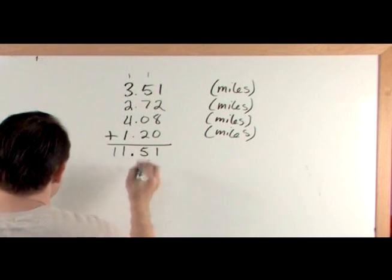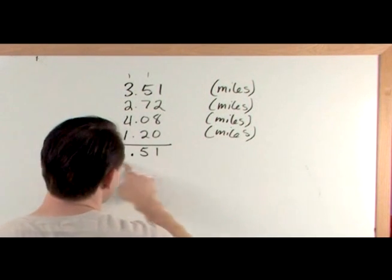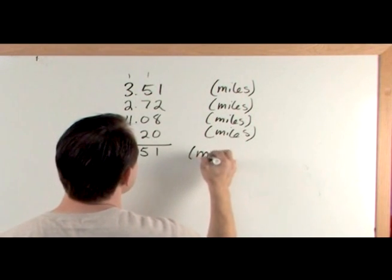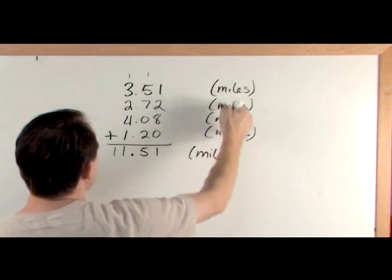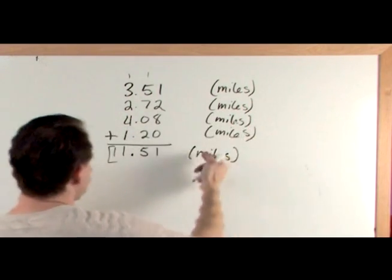And the decimal point just falls right on through. So it's 11.51 miles. And that's why we carry our miles down because it reminds us what we're doing. Miles plus miles plus miles plus miles gives me miles.